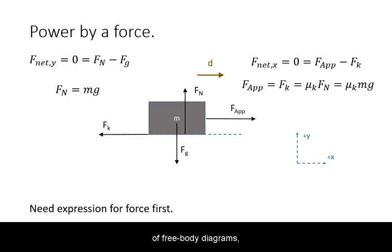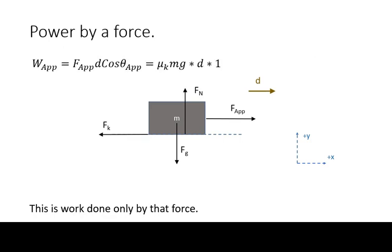This often involves the use of free body diagrams and applying Newton's second law. In this example, we have a box pushed along a surface at constant speed by an applied force. We calculate expressions for that force and also calculate the direction. In this case, the applied force is in the same direction as the displacement.